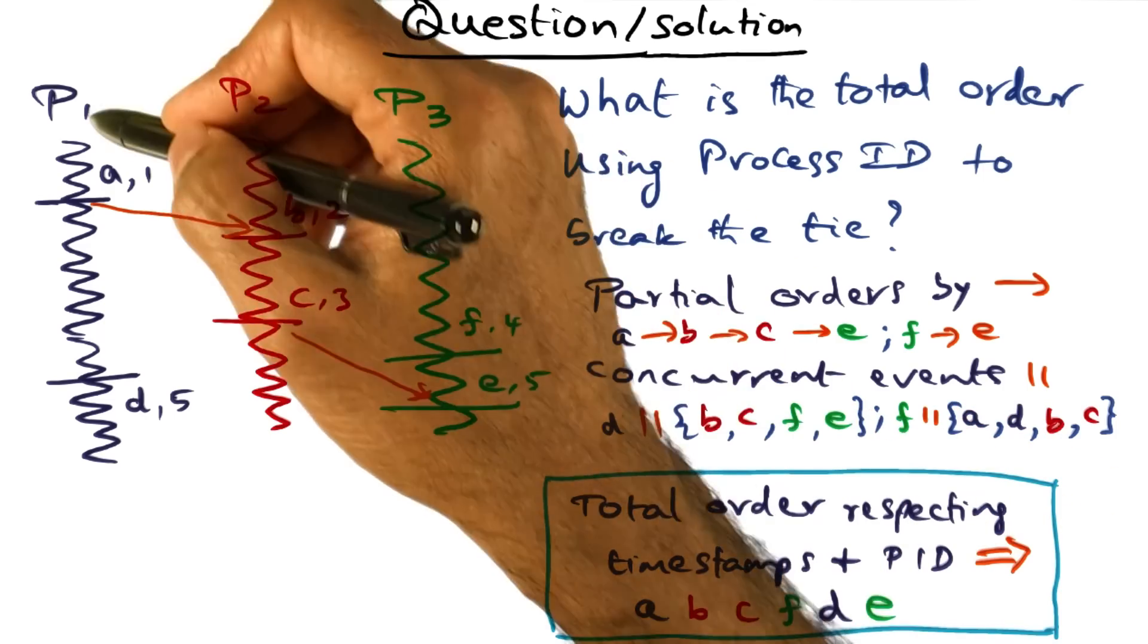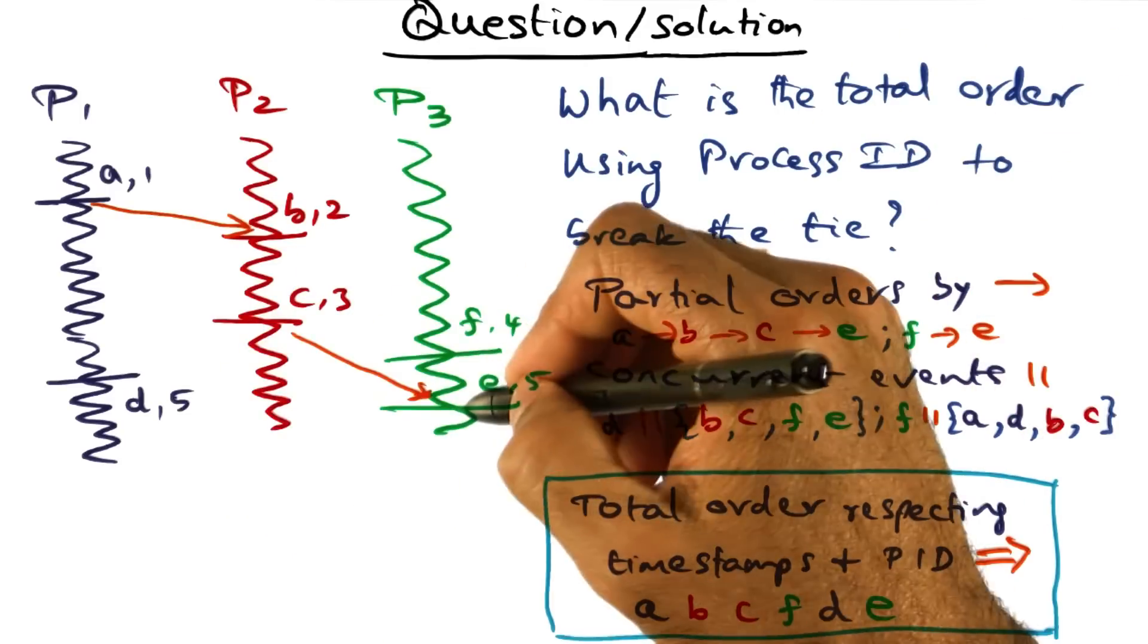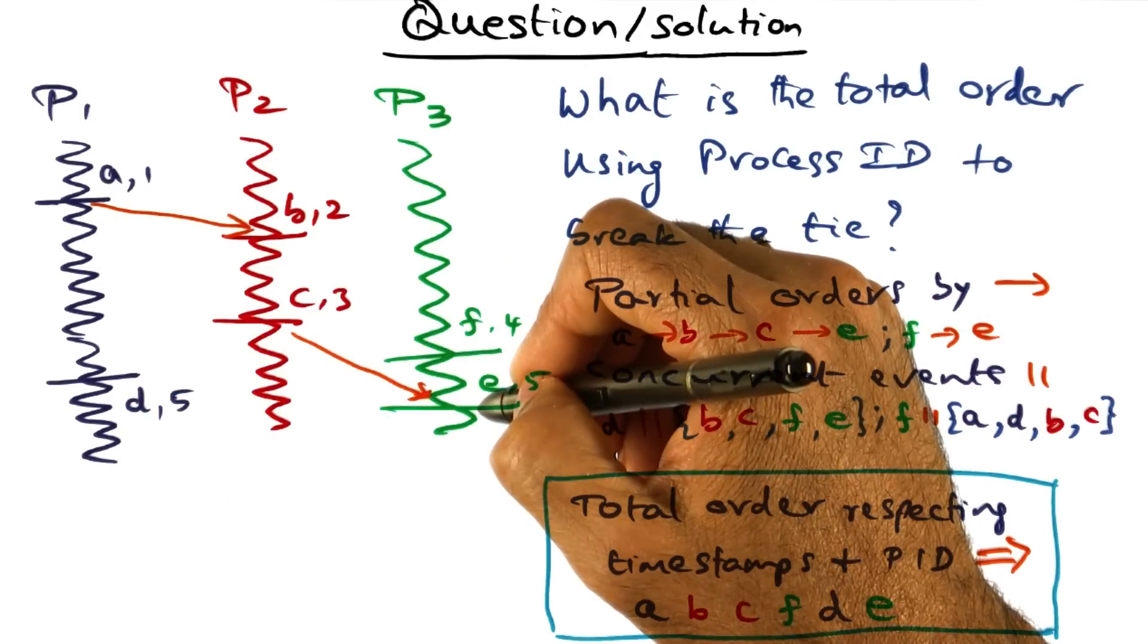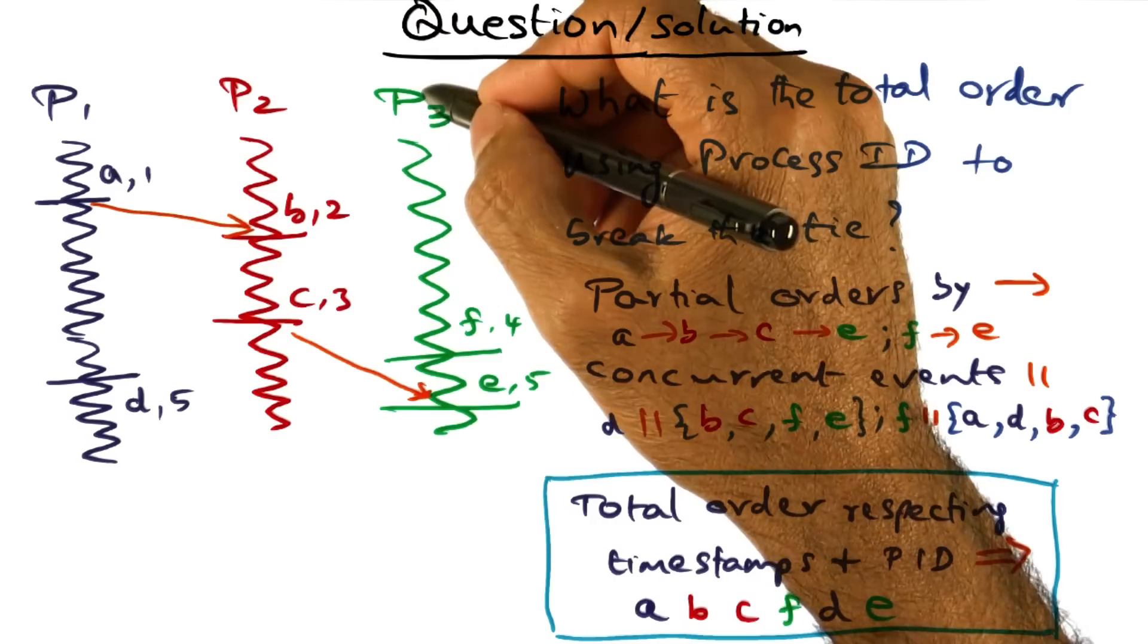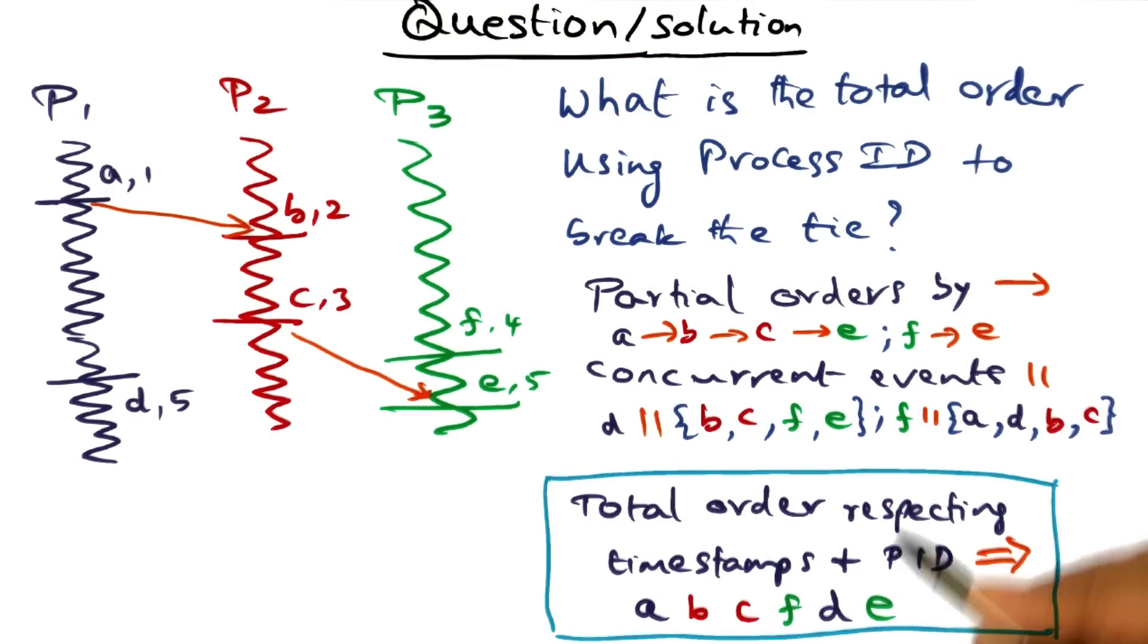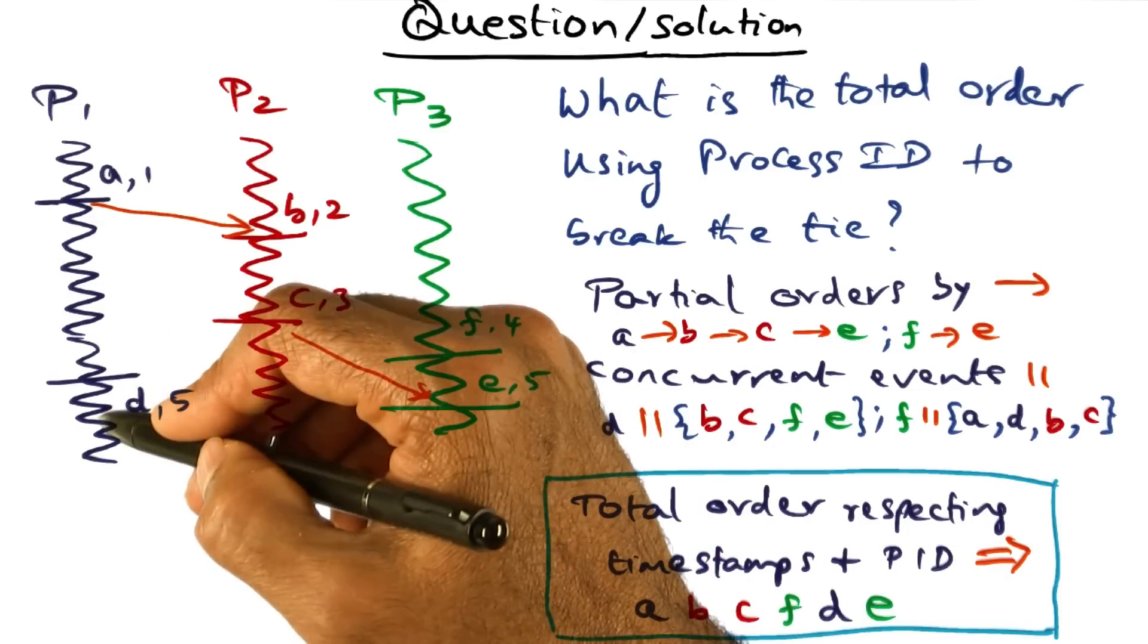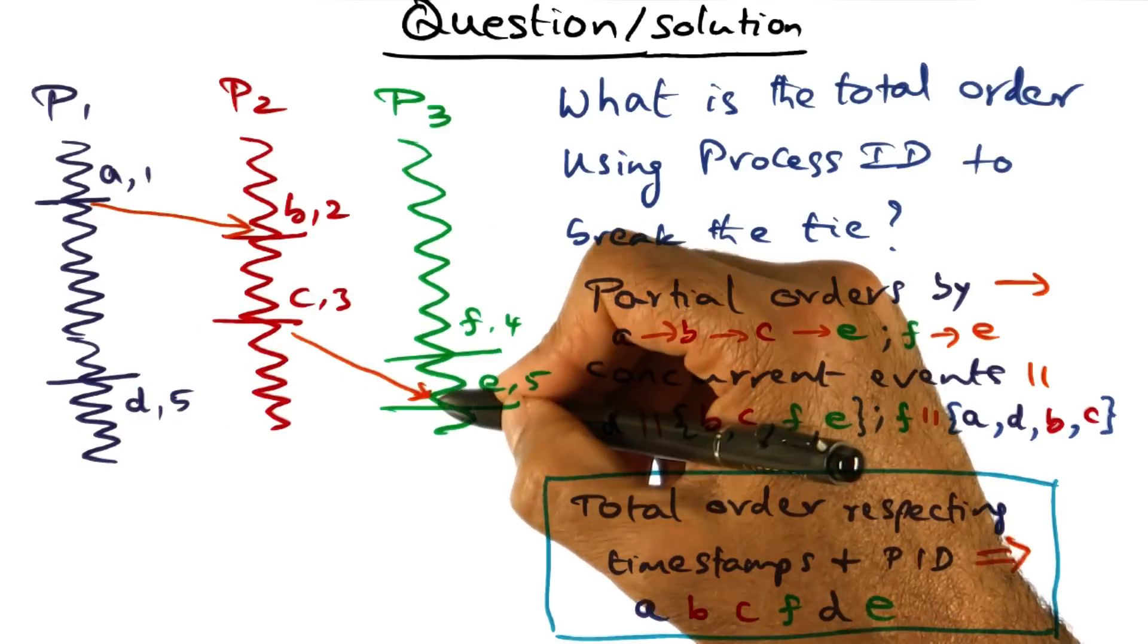This is where breaking the tie using process ID comes into play. Because these two guys are concurrent events in the system, we're breaking the tie using the process ID. P1 happens to be less than P3 in process ID space and therefore we're going to say that in the total order D is going to be ahead, totally ordered before E.